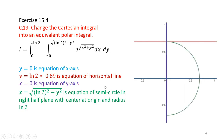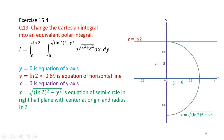Next we draw these boundaries. The horizontal line y = ln 2 is approximately 0.7. We have x = 0 as the y-axis, y = 0 as the x-axis, and a semicircle in the right half plane whose radius is ln 2. The common bounded region of all four boundaries lies in the first quadrant.